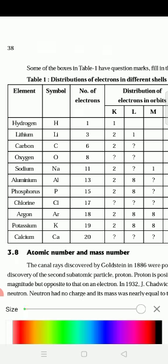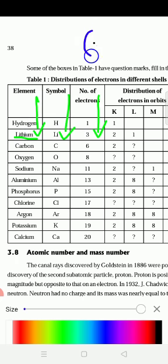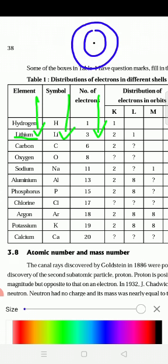Now we go to the second one. The second element is lithium. The symbol for lithium is Li. Number of electrons: three. Now how to distribute this? Draw the nucleus, then draw the shells — K shell and L shell. According to the number of electrons we draw the shells; we don't draw all four shells K, L, M, N.